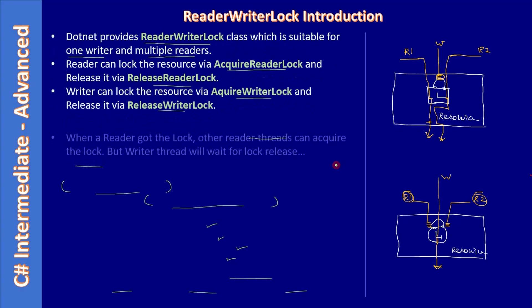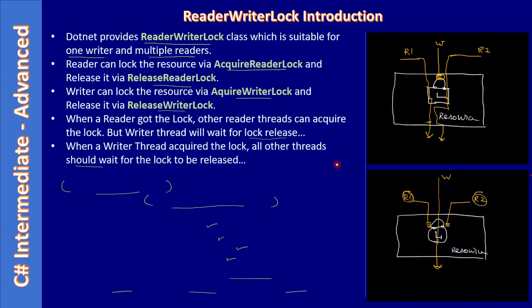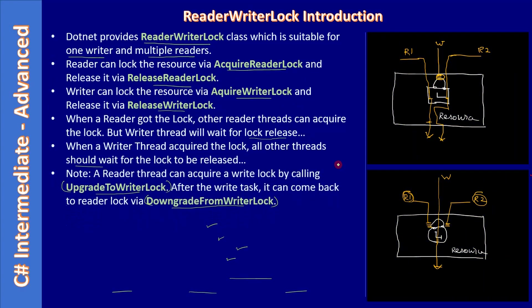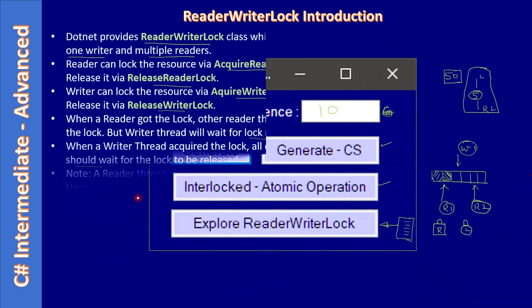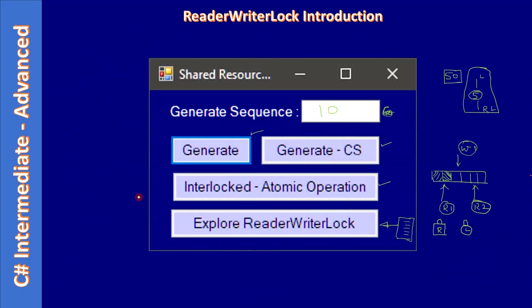First we learned the basics of ReaderWriterLock and its methods: AcquireReaderLock, ReleaseReaderLock, AcquireWriterLock, ReleaseWriterLock. We also talked about upgrading the reader lock to a writer lock, then downgrading it back to a reader lock. Next we talked about the example and now we are implementing the ReaderWriterLock.